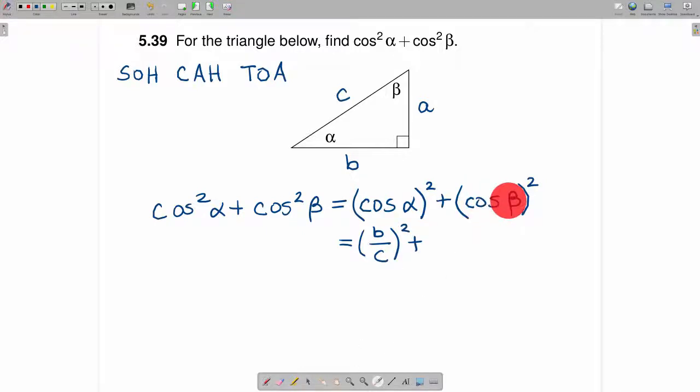Next, to find the cosine of beta, from beta's perspective, we're looking at the cosine, which is the adjacent over the hypotenuse. The adjacent side is A, and the hypotenuse is C.